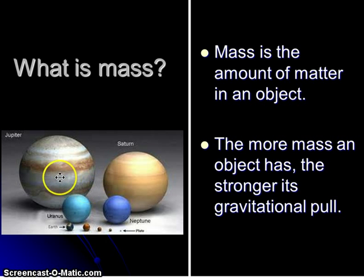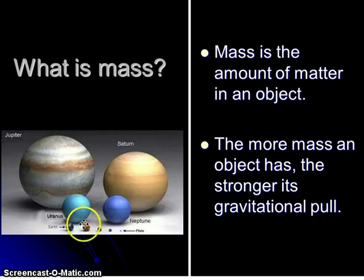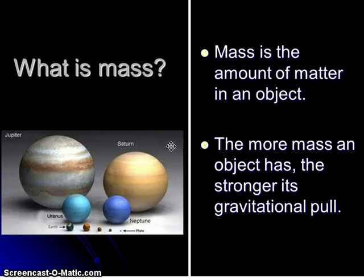Think about the planets with the most moons in our solar system — they just happen to be the planets with the most mass: Jupiter, Saturn, Uranus, and Neptune. They have a massive amount of mass, which means they have a lot of gravity, so they have the ability to pull more objects into their gravitational pull, and then those objects will orbit around them.